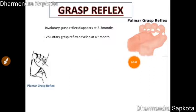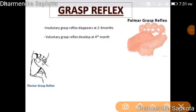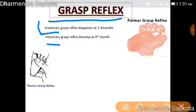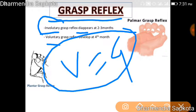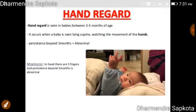Let's learn today about milestones in child development. First, in fine motor development, there is something called the grasp reflex. There are two types: involuntary grasp reflex and voluntary grasp. Involuntary means it occurs without any conscious will, and it disappears by two to three months. Voluntary grasp comes at about four months.